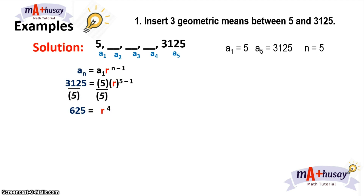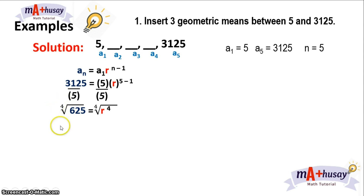In order to solve for r, we have to get the fourth root of both sides of the equation. Notice that the index of the radical is even, so in this case we have two values — r should be positive or negative 5.